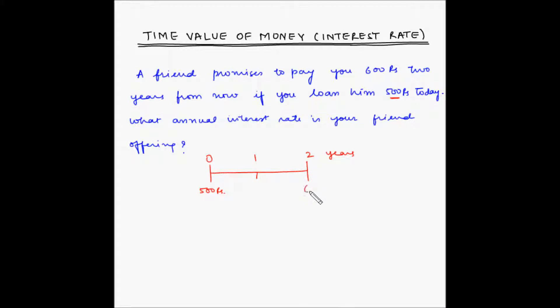So the present value is 500 rupees and the future value is 600 rupees. We have to find out what is the rate of interest per annum.